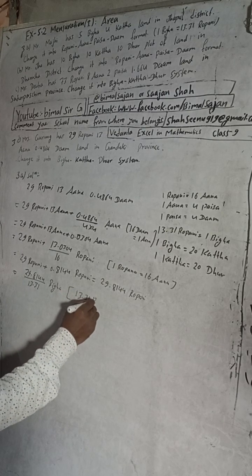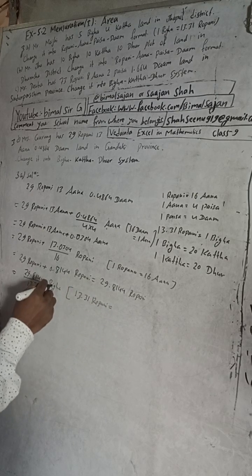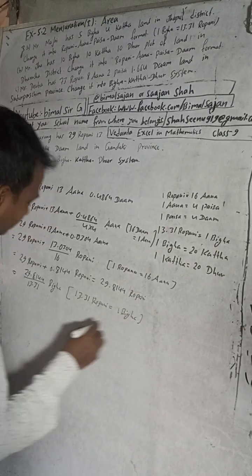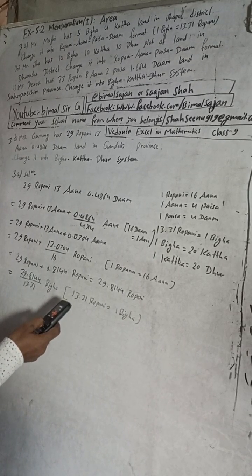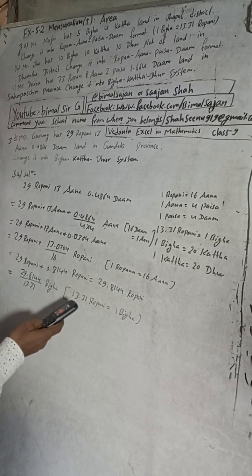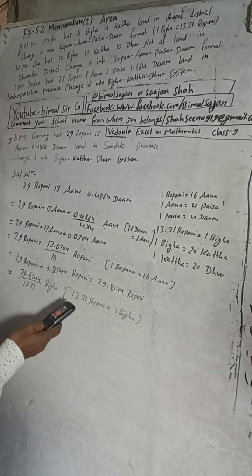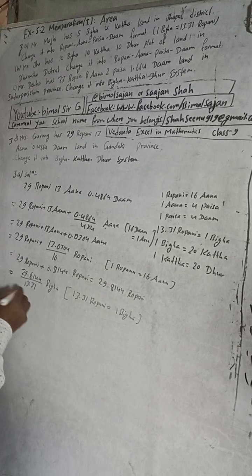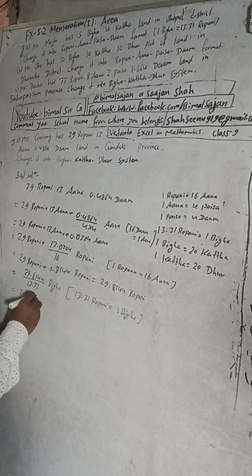30.31 Ropuni divided by 13.31, this will be ground. Now divide by 30.31. We get a 2.24. 2.24 bigaya.